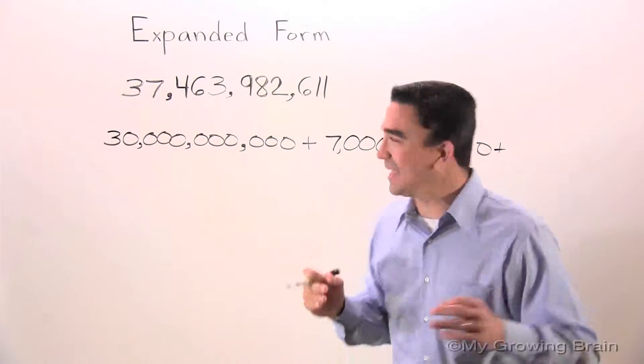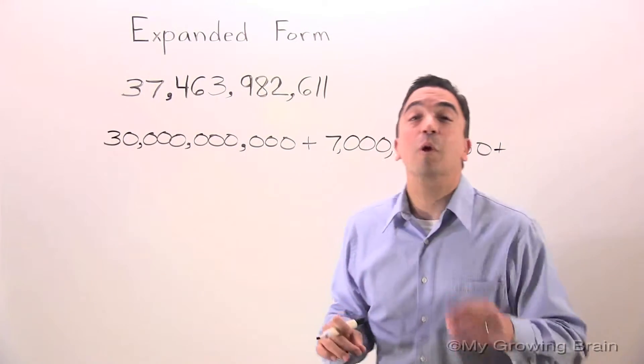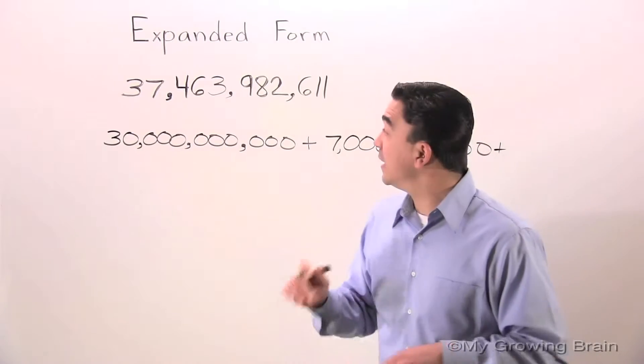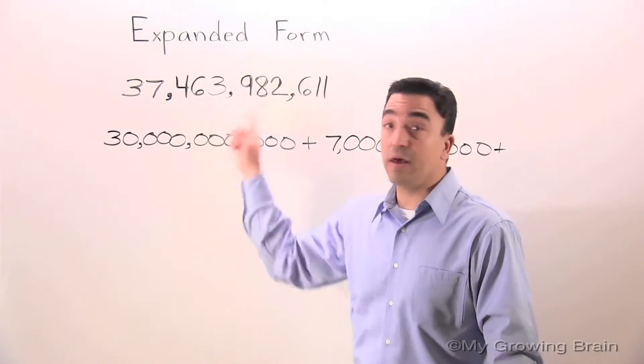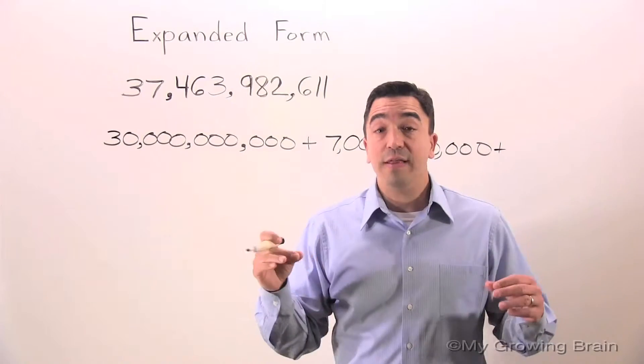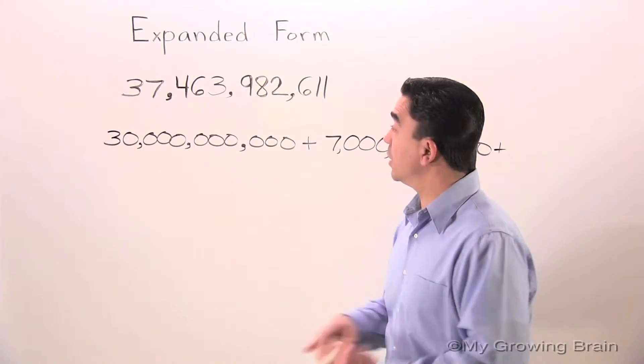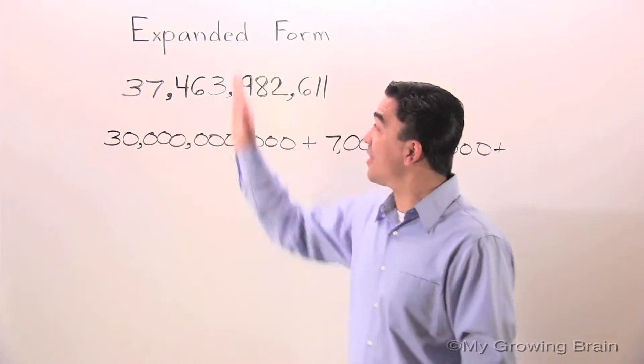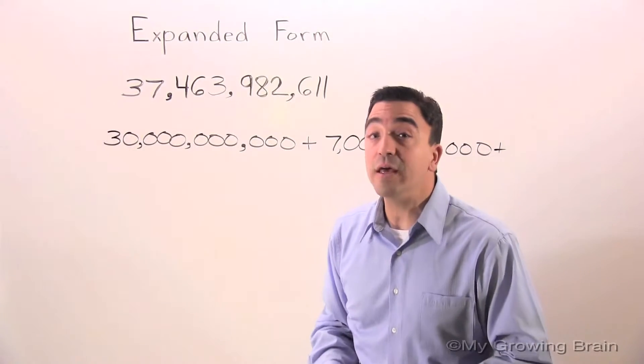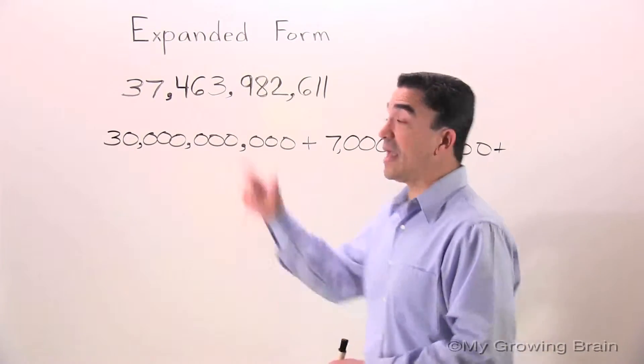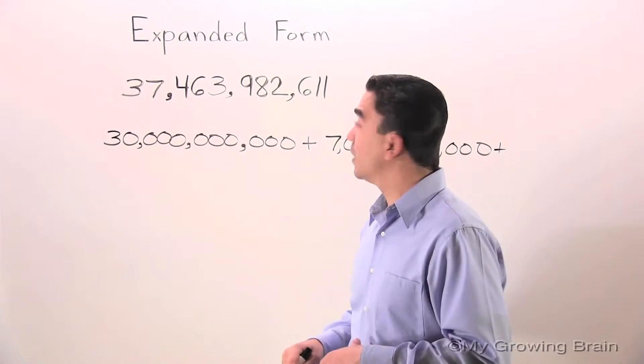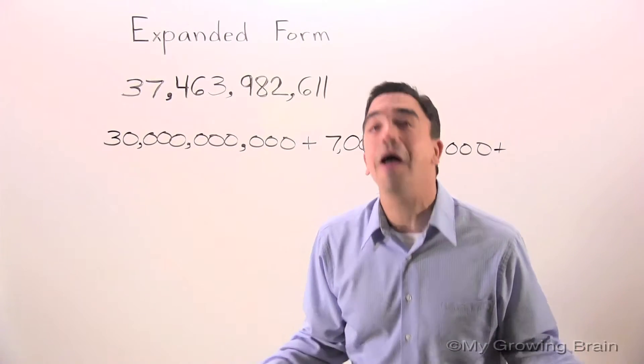This is big. All right, we're going to move on into the millions period. And the next digit we're going to look at is the 4 in the 100 millions place. It has a value of 400 million. Let's write it.